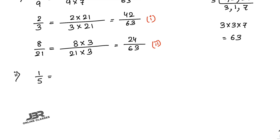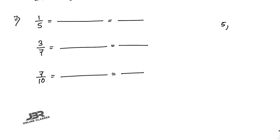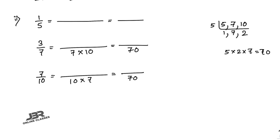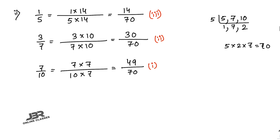Number 2: 1 by 5, 3 by 7, and 7 by 10. Find the LCM of 5, 7, and 10: that is 5 into 2 into 7 equals 70. Converting: 1 by 5 becomes 14, 3 by 7 becomes 30, and 7 by 10 becomes 49 — all over 70. Descending order: 7 by 10, then 3 by 7, then 1 by 5. Remember to write the original fractions in your answer.